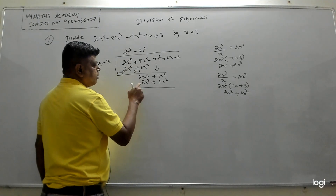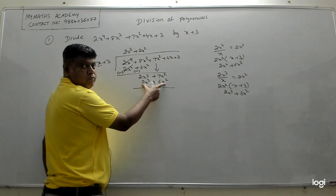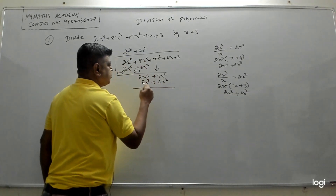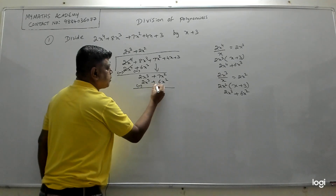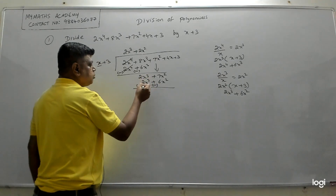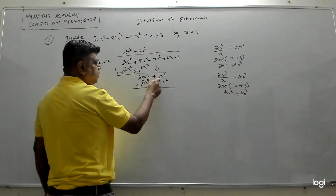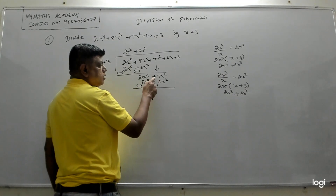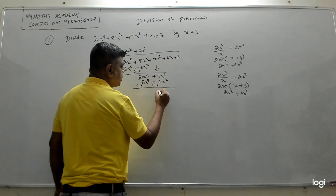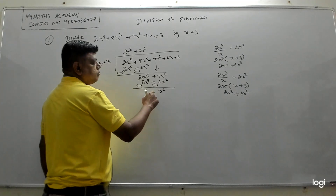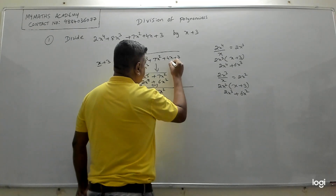Write 2x³ + 6x² and subtract. Change the sign: plus becomes minus. So 2x³ − 2x³ cancels. Then 7x² − 6x² = 1x², which is just x². Bring down the next term: +4x.